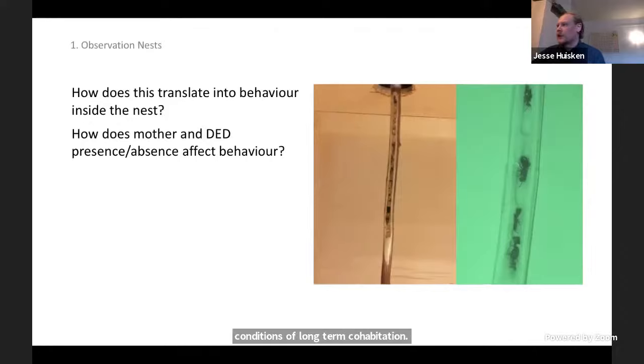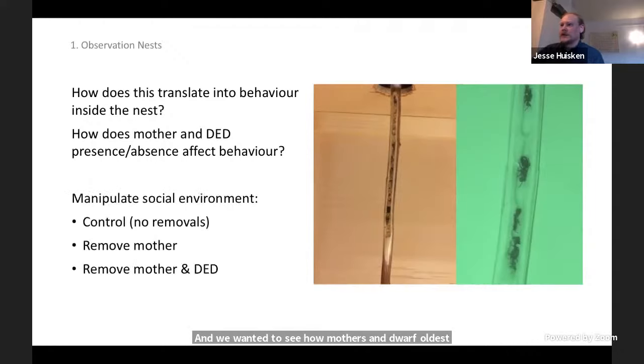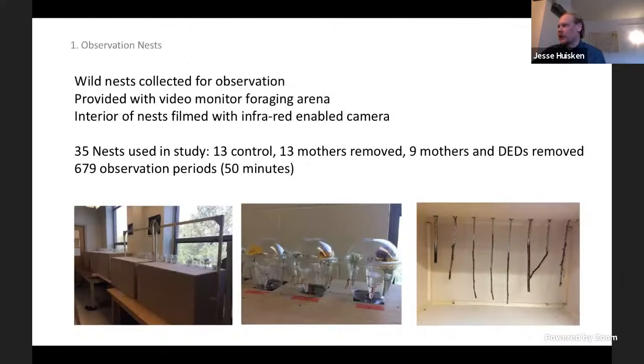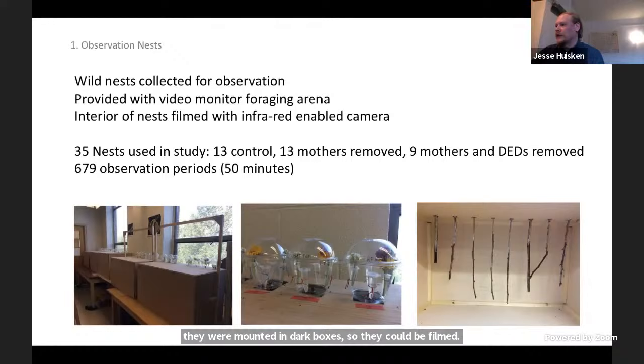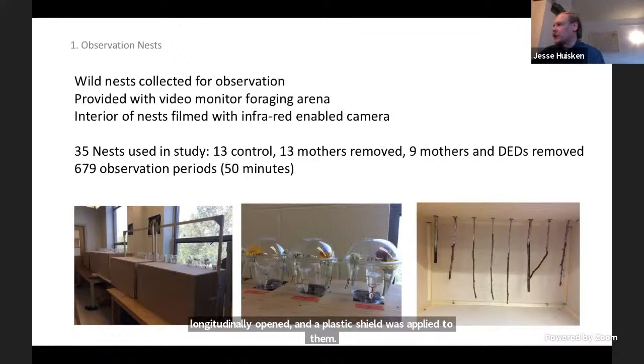We were interested in how does this actually translate into behaviors within nests during the conditions of long-term cohabitation. We constructed observation nests and applied two manipulations as well as a control: control nests of undisturbed phenotypes, nests with mothers removed, and both mothers and dwarf eldest daughters removed. Wild nests were collected from artificial nests established in the wild and mounted in dark boxes so they could be filmed. They were also provided with foraging arenas so we could collect foraging trip counts, provisioned with sugar water and flowers for pollen. The interior nests were longitudinally opened and a plastic shield was applied to them, and the interiors were filmed using an infrared camera.